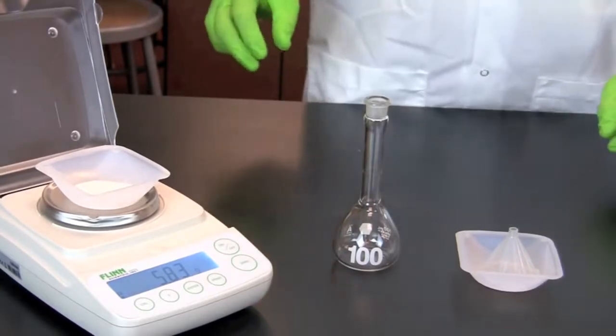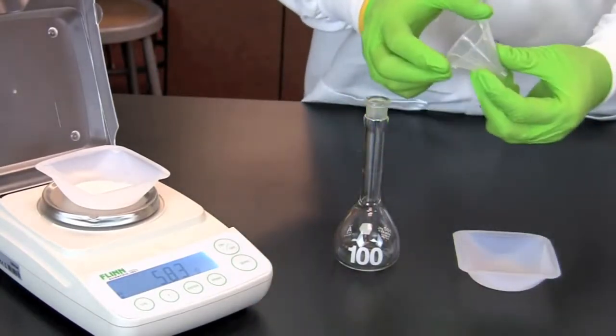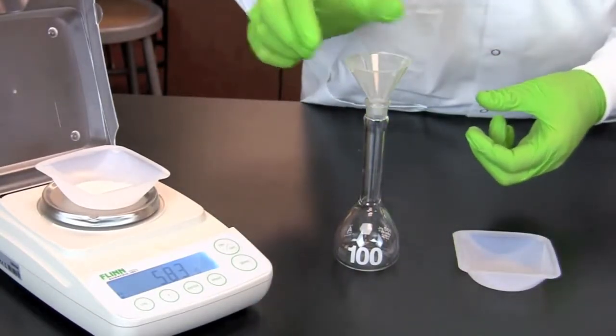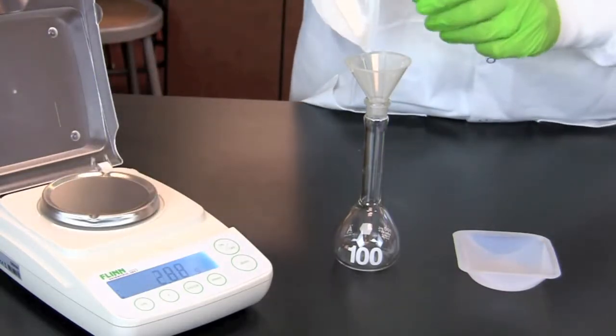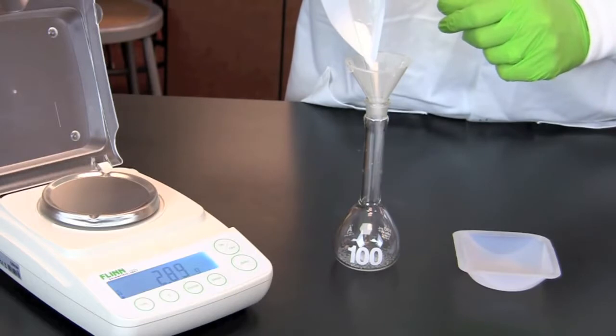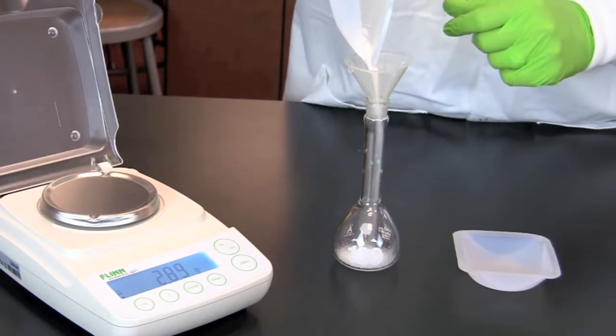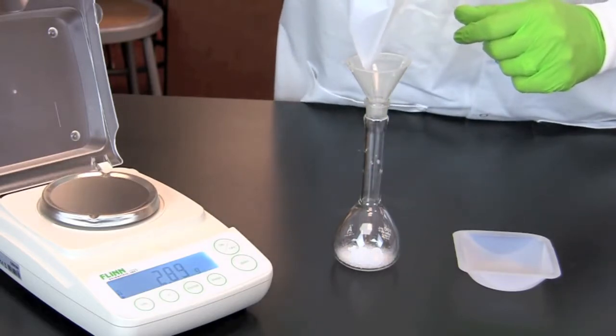The solution will be made in a 100 ml volumetric flask. To get the sodium chloride into the volumetric flask, we first place a powder funnel on top of the flask. We then take the weigh boat with the correct amount of sodium chloride and transfer it into the flask.